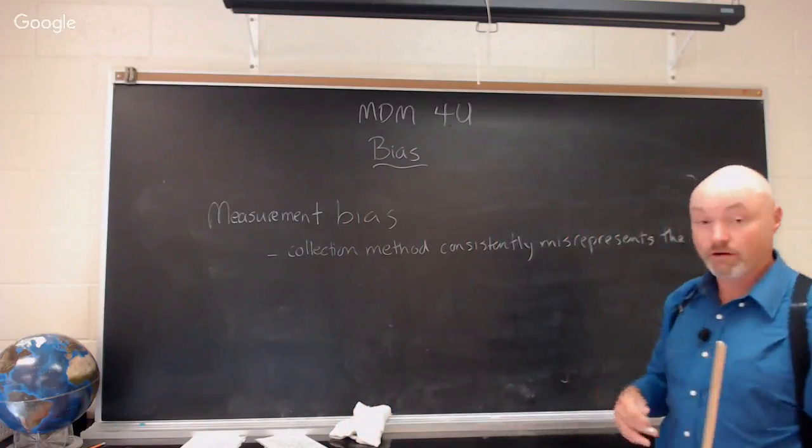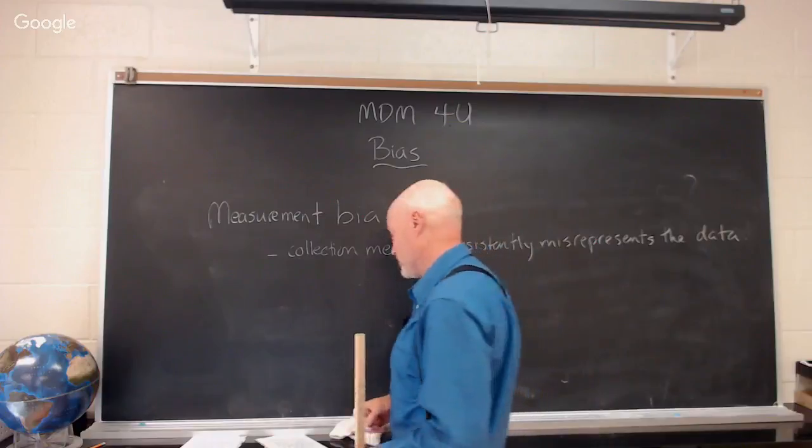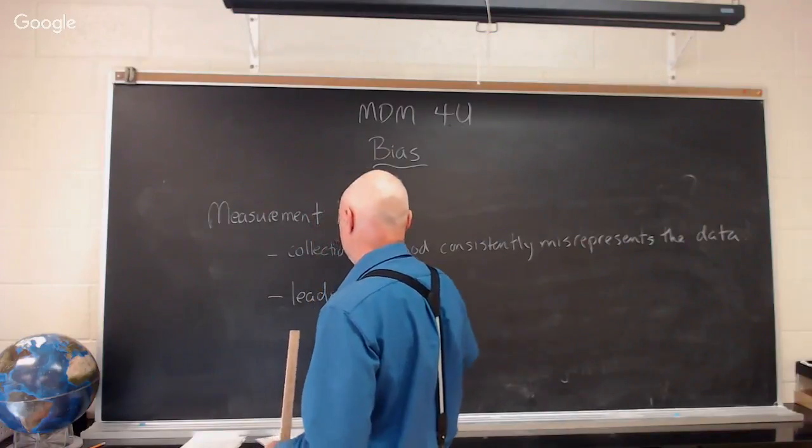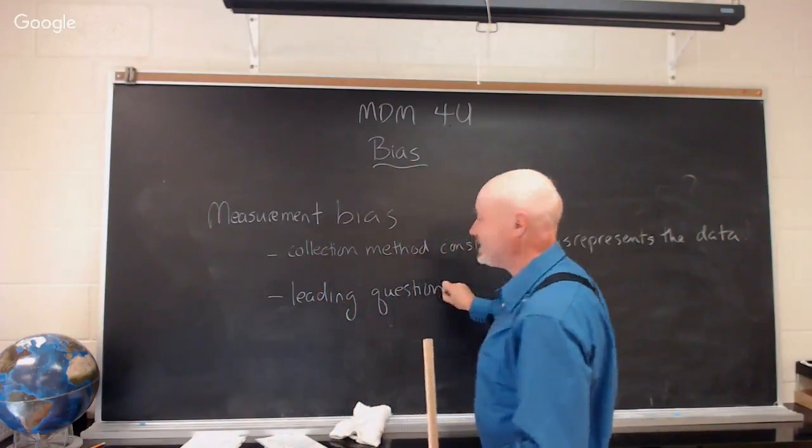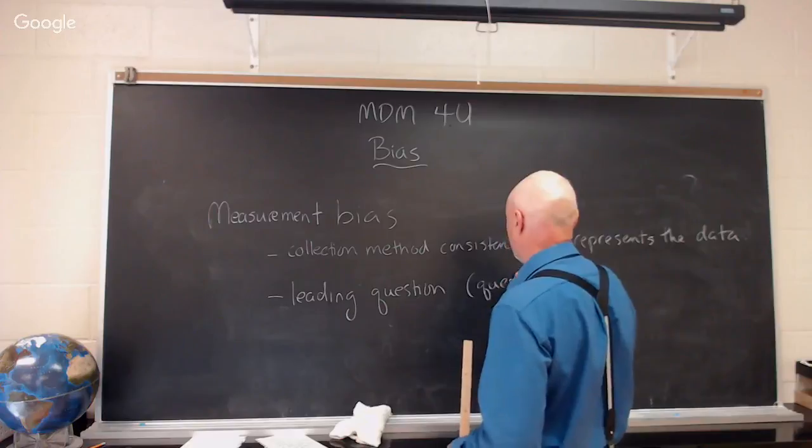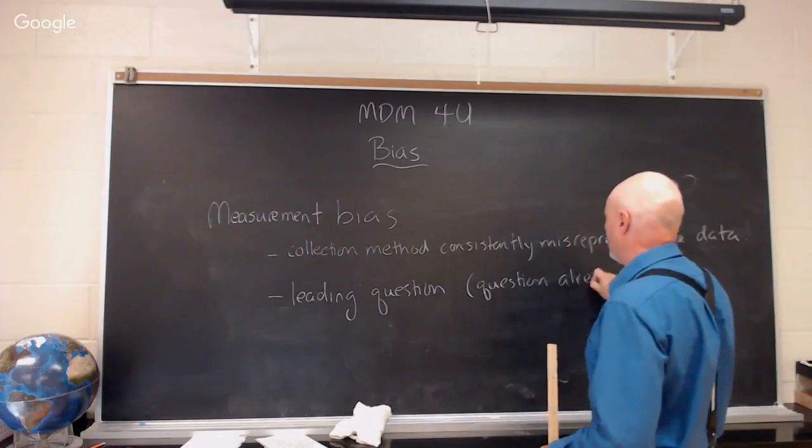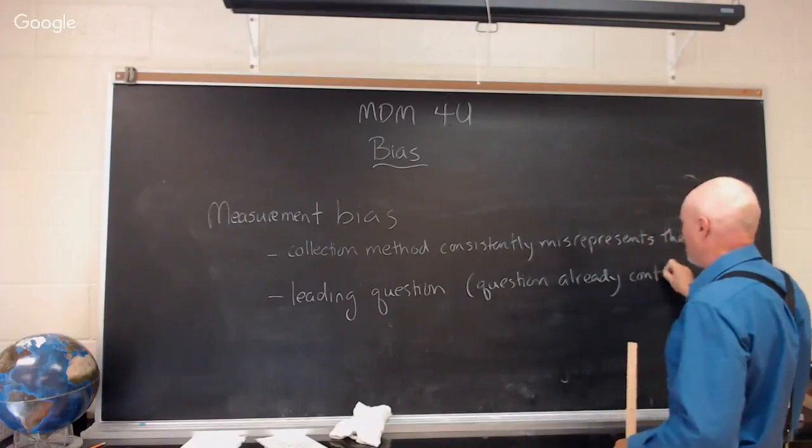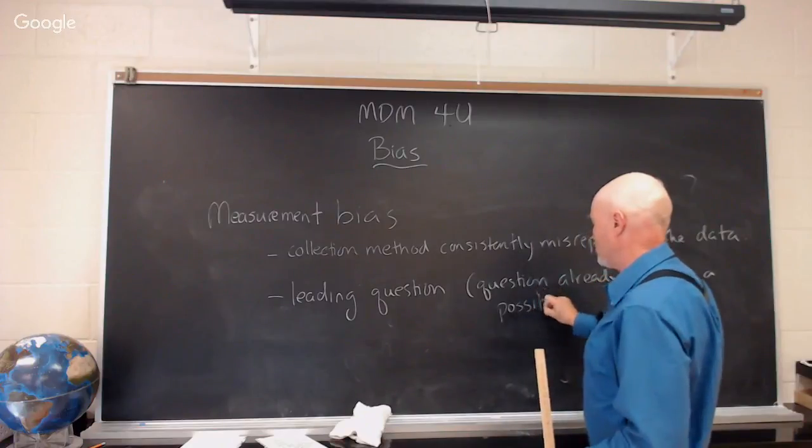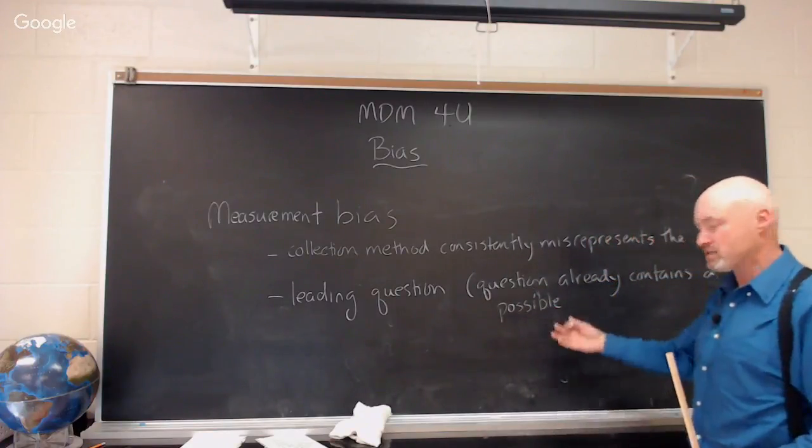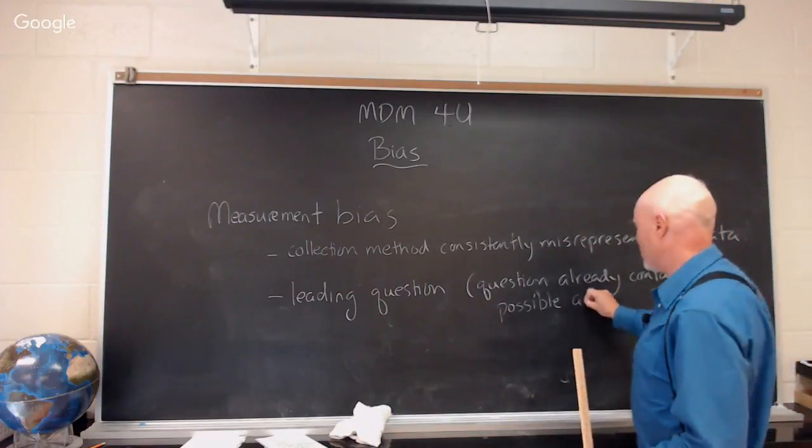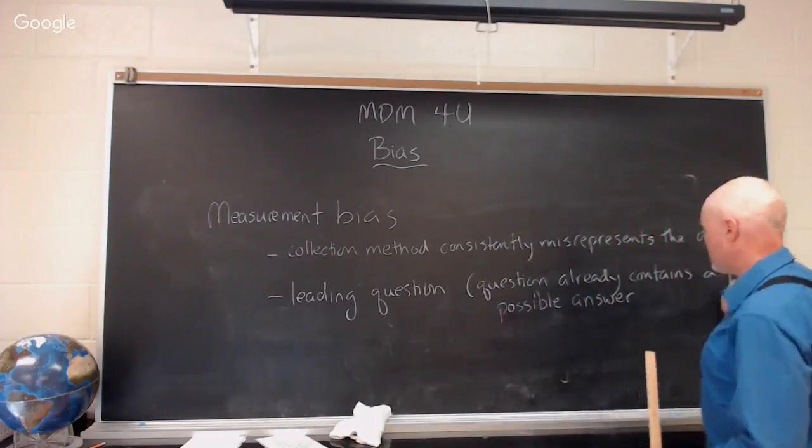There are other ways. If you're doing a survey, for example, you can ask the leading question. A leading question is a question that already contains a possible answer. What you're actually doing when you're asking the leading question is you're subtly biasing your respondents to probably give the answer or the example answer that you've provided.